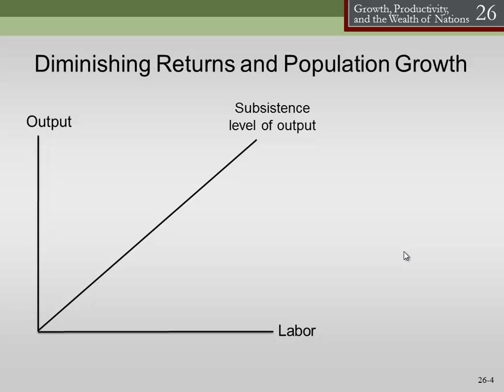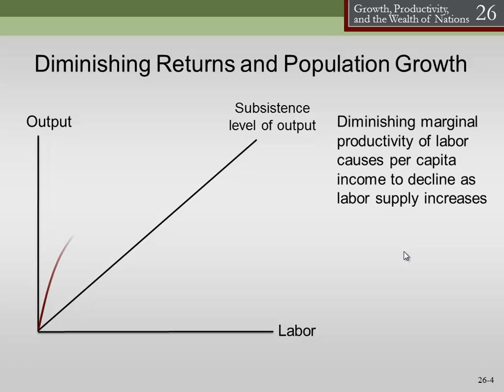One of the things we have to run into is this idea of diminishing returns. Diminishing marginal productivity of labor causes per capita income to decline as labor supply increases. In other words, let's think of it like this — let's say we have a coffee shop.